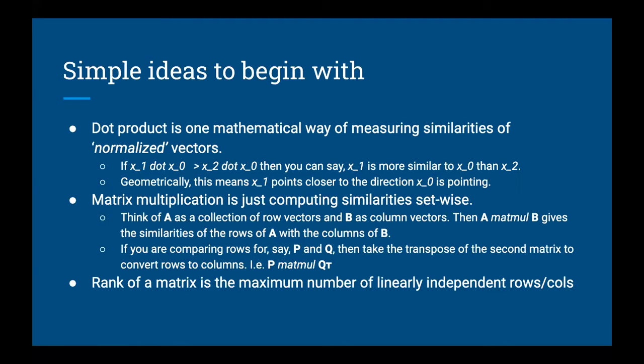I'd like us to start on the same footing first — some simple ideas that you've probably mastered already, or not. Since we need to establish a similar understanding here. Our favorite topic, if you are doing machine learning, is dot product. I would say this is one mathematical way of measuring similarities between vectors. Let's forget normalization for now.